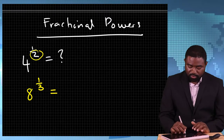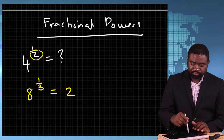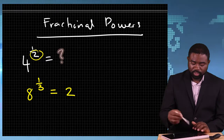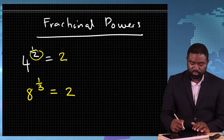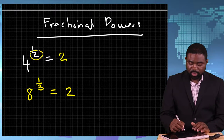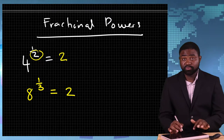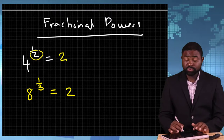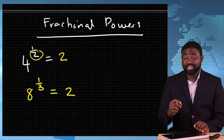In this case, this is 2. Why? Because 2 times 2 is 4, and 2 times 2 times 2 is 8.